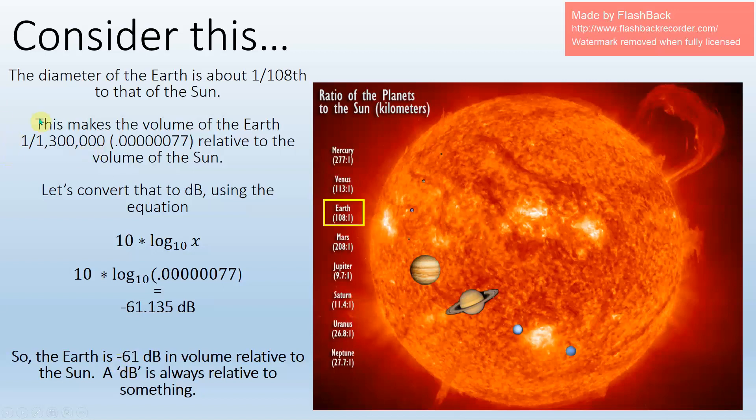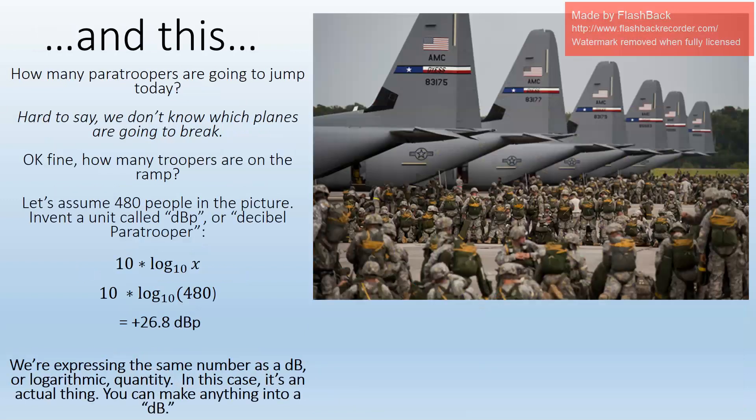But if you wanted to go back to linear numbers, you'd say the Sun is 1.3 million times bigger than the Earth. We converted it to dB because 61 is a way easier number to communicate than 1.3 million. So the whole point of this is just to motivate why we use the logarithmic scale when we use dBs—it's just to compare things that are of drastically different sizes. And that's what shows up in RF signals pretty frequently.